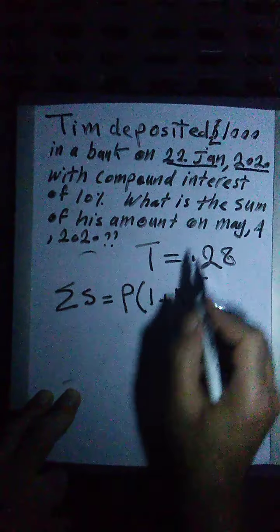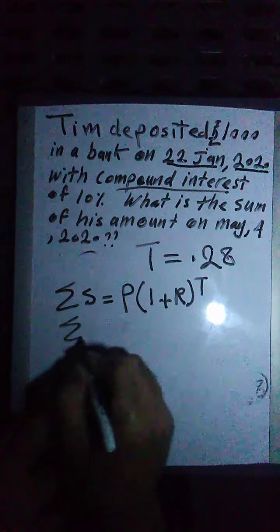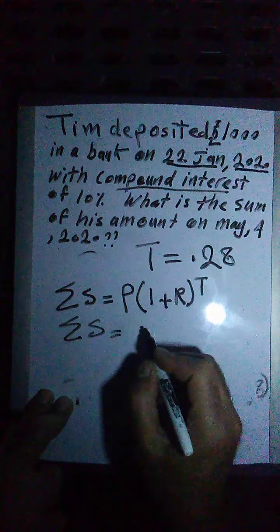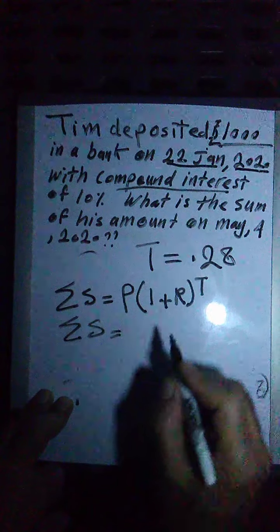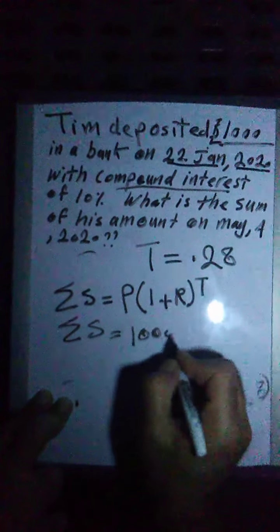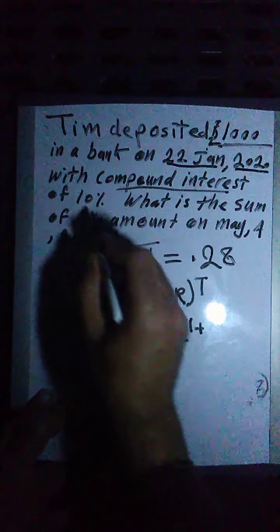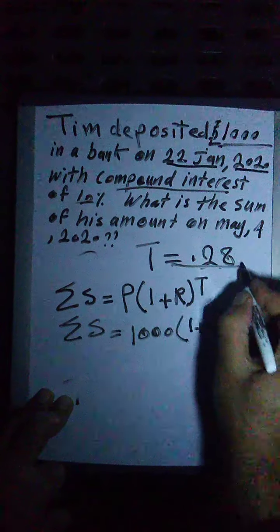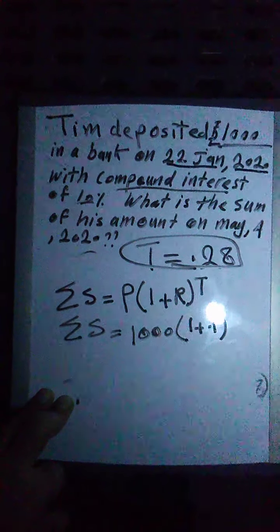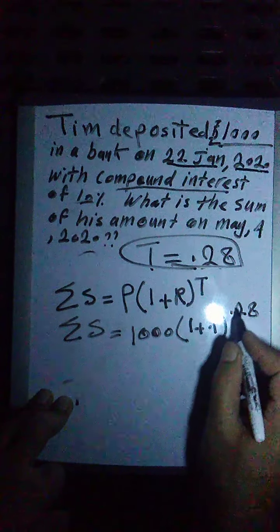So the sum, the whole sum of the amount will be, the principal is 1,000. The principal is 1,000 times 1 plus, my R rate is 10%, 0.1. Then the T is here. My T is here, 0.28. The power, 0.28.